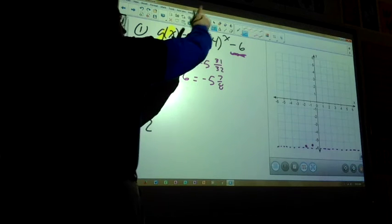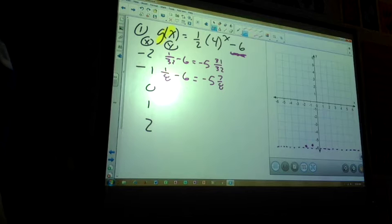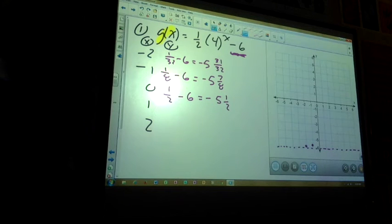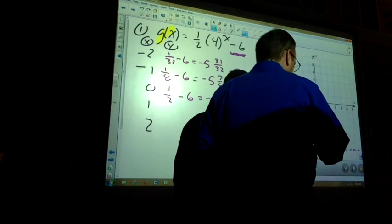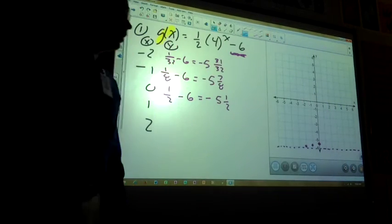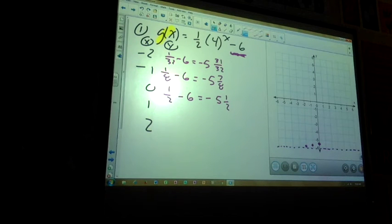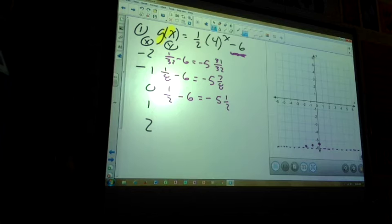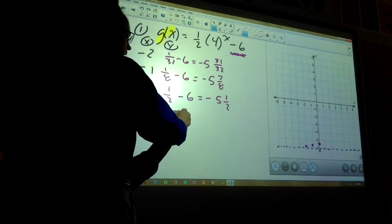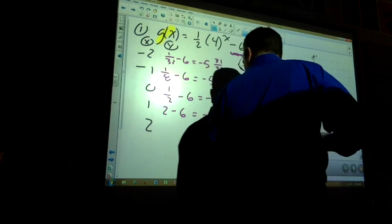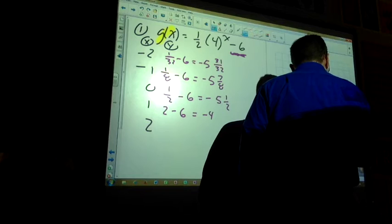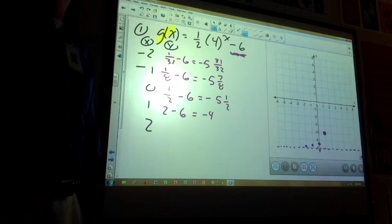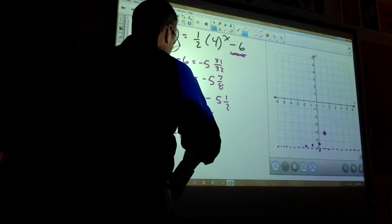Then if I plug negative 1, 4 to the negative 1 is 1 over 4 to the first, which is 1 fourth. 1 fourth times 1 half is 1 eighth. And 1 eighth minus 6 becomes negative 5 and 7 eighths. Is that pretty close to negative 6 as well? It sure is. So it's just a little bit above it. And then let's plug 0 in. 4 to the 0 is how much? 1. 1 times 1 half is 1 half. So I get 1 half minus 6, which is negative 5 and 1 half. Is that still pretty close to negative 6? Yep. It's just coming up just a little bit each time.